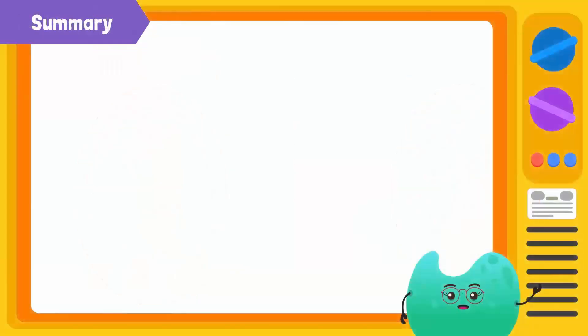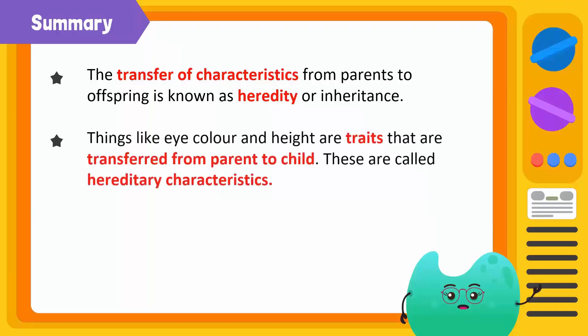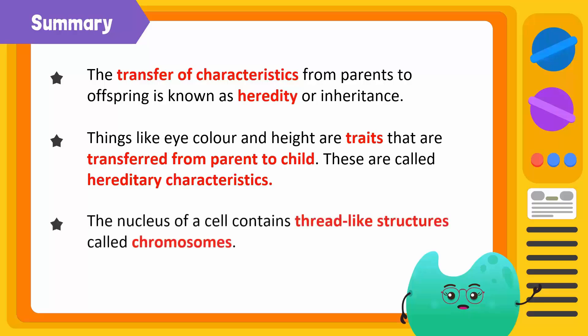Let's summarize. The transfer of characteristics from parents to offspring is known as heredity or inheritance. The characteristics transferred or passed on from parents to children are called hereditary characteristics. The nucleus of a cell contains thread-like structures called chromosomes.